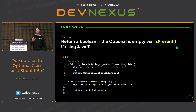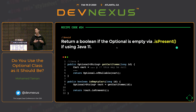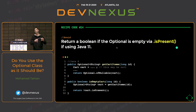Regarding the difference between map() and flatMap(): use map() when the method you're calling returns a plain value. Use flatMap() when the method you're calling already returns an Optional. Both map() and flatMap() return Optional of the wrapped value — the difference is whether your transformation function returns a raw value or an Optional.